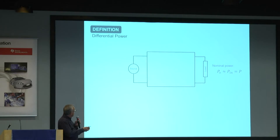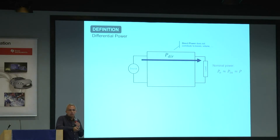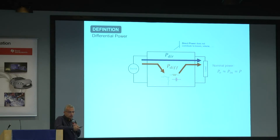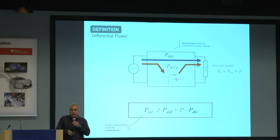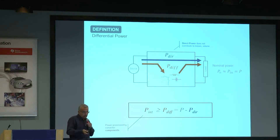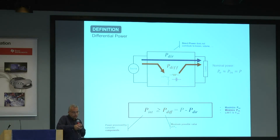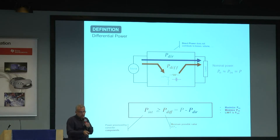Basically, when we have any power converter with nominal power P, there is a power that flows from source to load without producing any losses — something we are not normally used to talking about. Only a part of the power is processed through the components; you store that in inductors and capacitors, then deliver it to the load. We can define the differential power as the difference between the nominal power and this direct power. What we would like to do in any converter is to maximize the direct power in order to minimize the internal power, and the limit you can reach is the differential power.